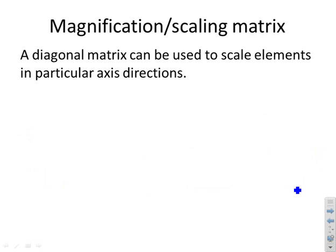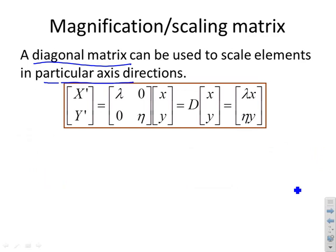You can also get magnification or scaling. We can use a diagonal matrix to scale elements in particular axis directions. I've chosen a diagonal matrix lambda on one diagonal, eta on the other diagonal. If I multiply xy by this diagonal matrix then x prime is lambda x and y prime is eta y. You can get a pure scaling in specified directions with a diagonal matrix.